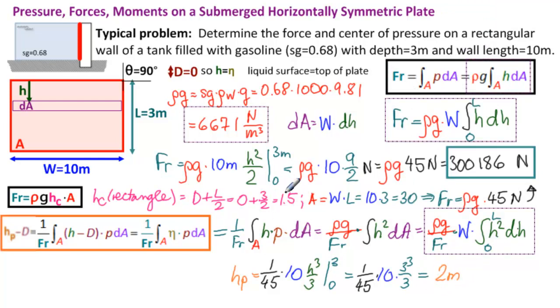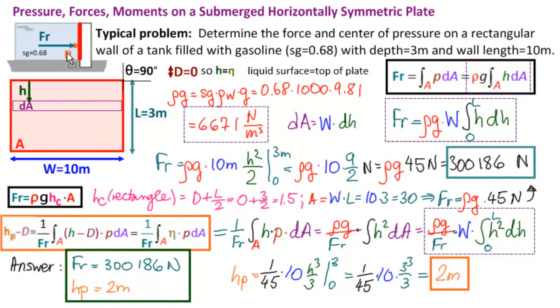So our answer, FR equal to 300,186 newtons and HP equal to 2 meters. So our resultant force is right about there. Resultant force is 2 thirds of the way down, 2 meters out of 3 meters. And that's where our resultant force is of 300,186 newtons. And we have solved this problem.